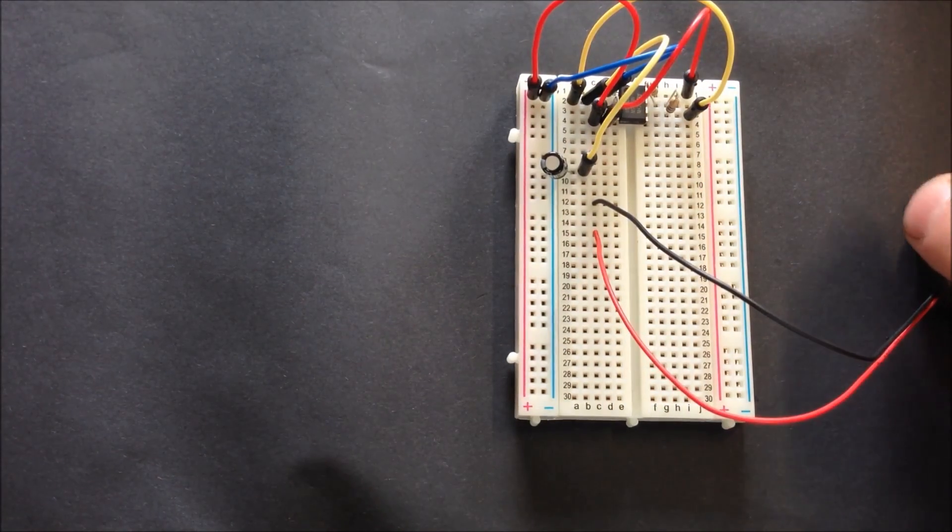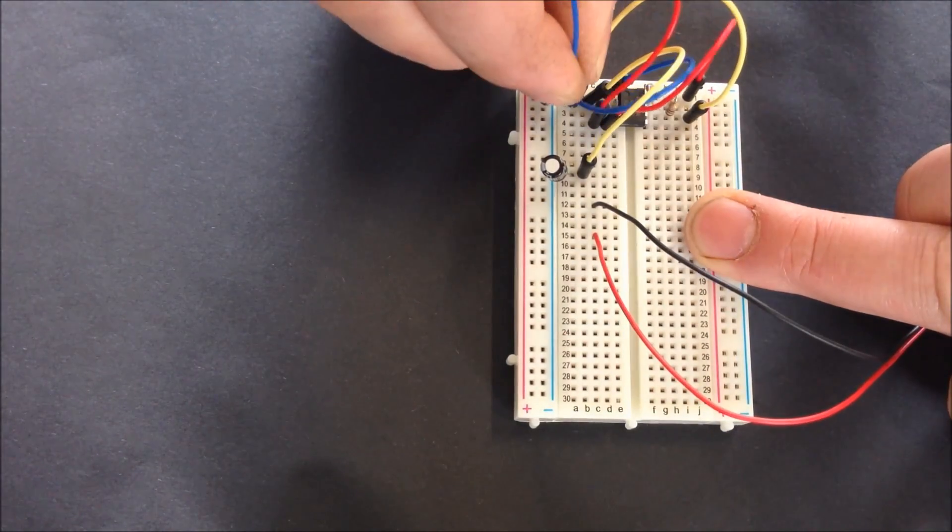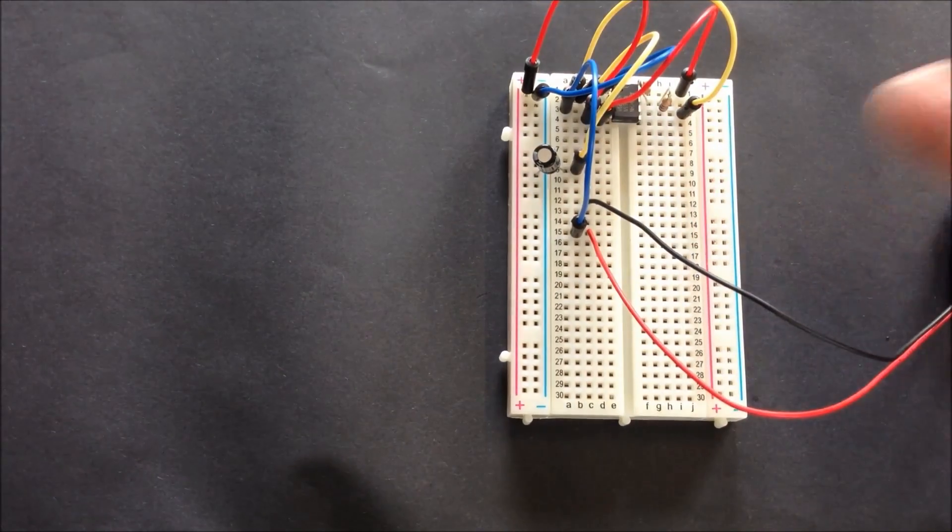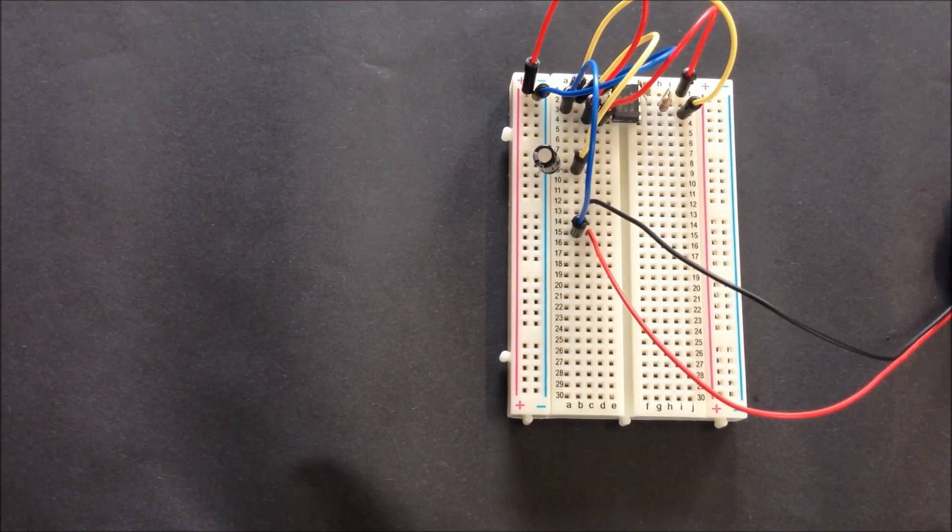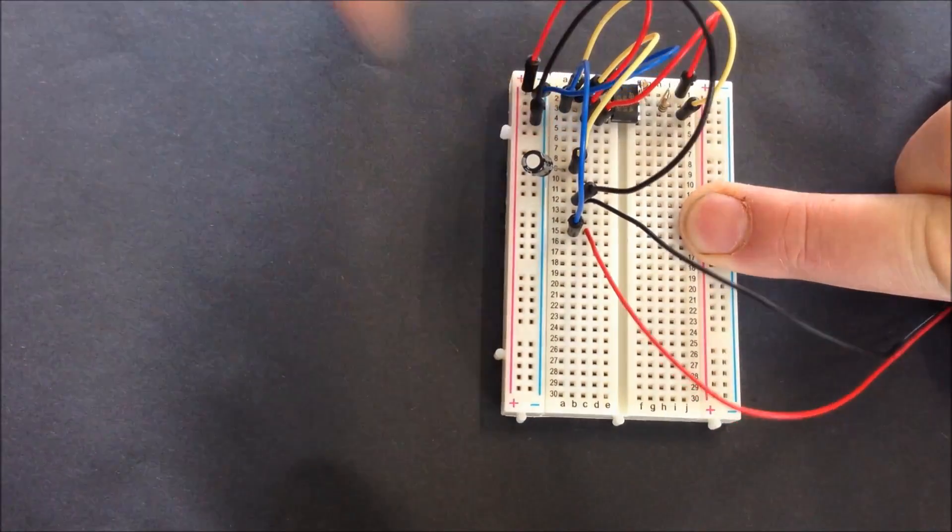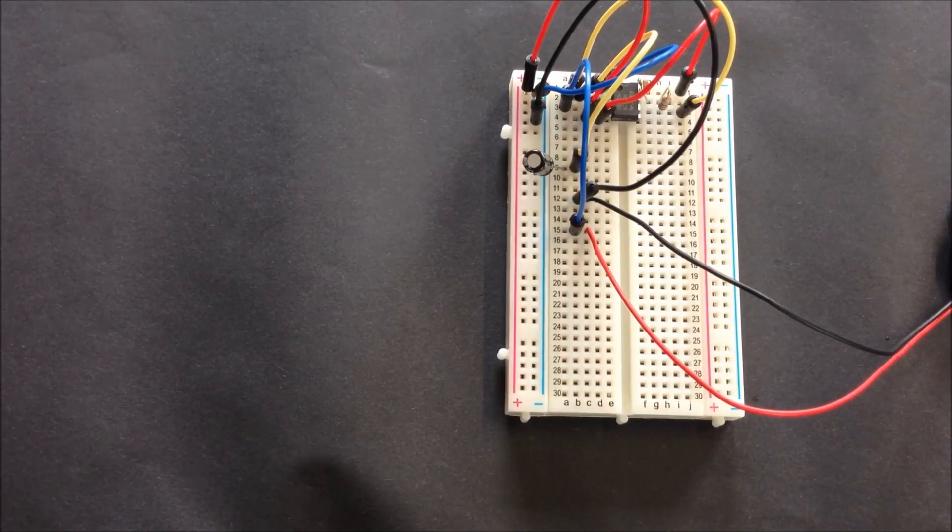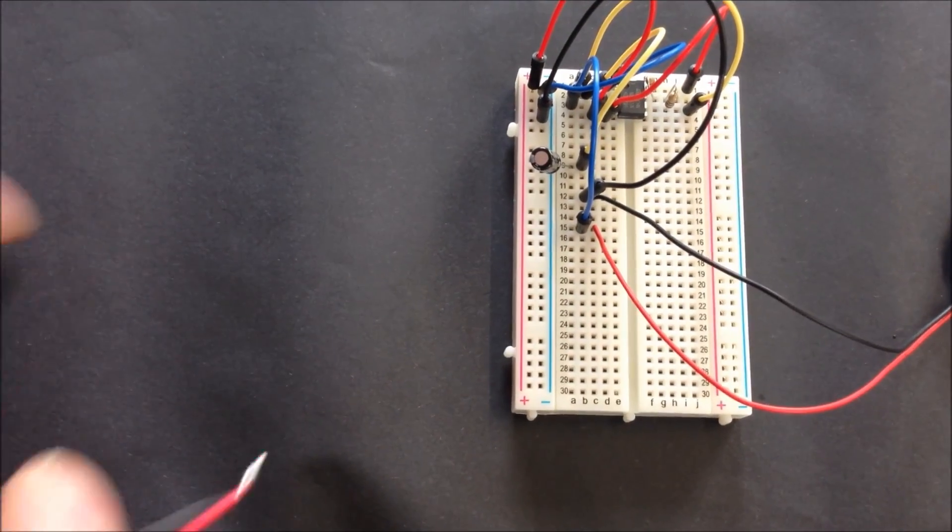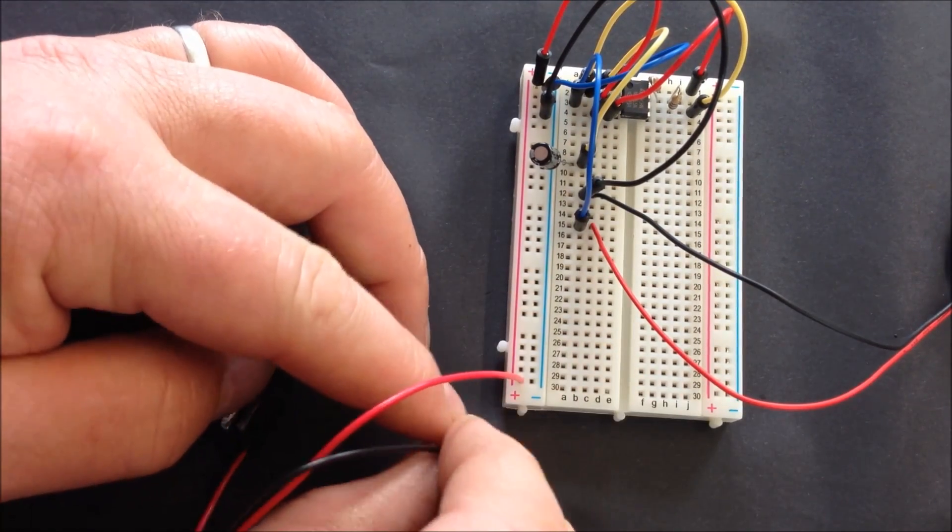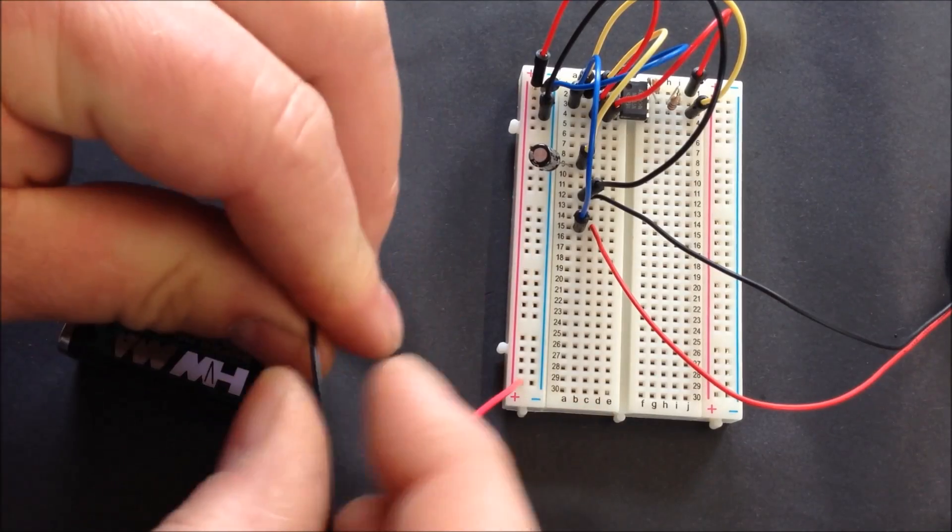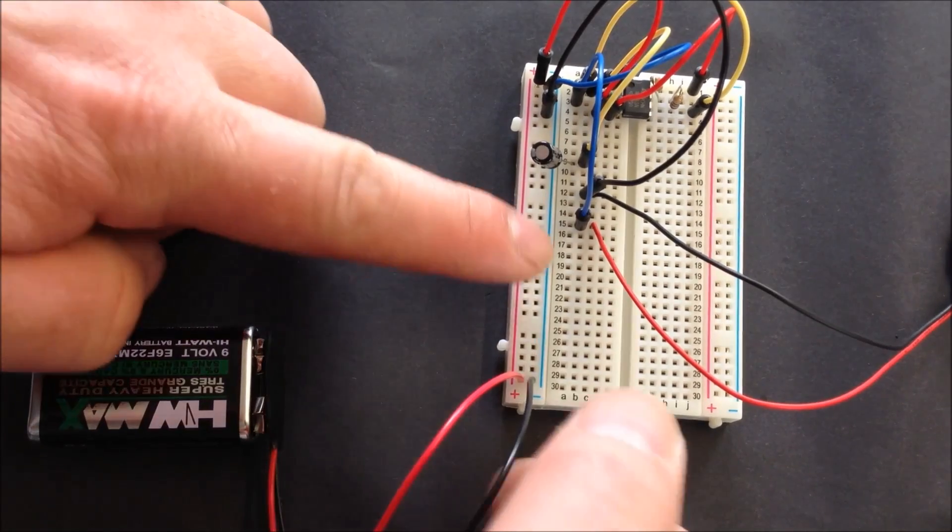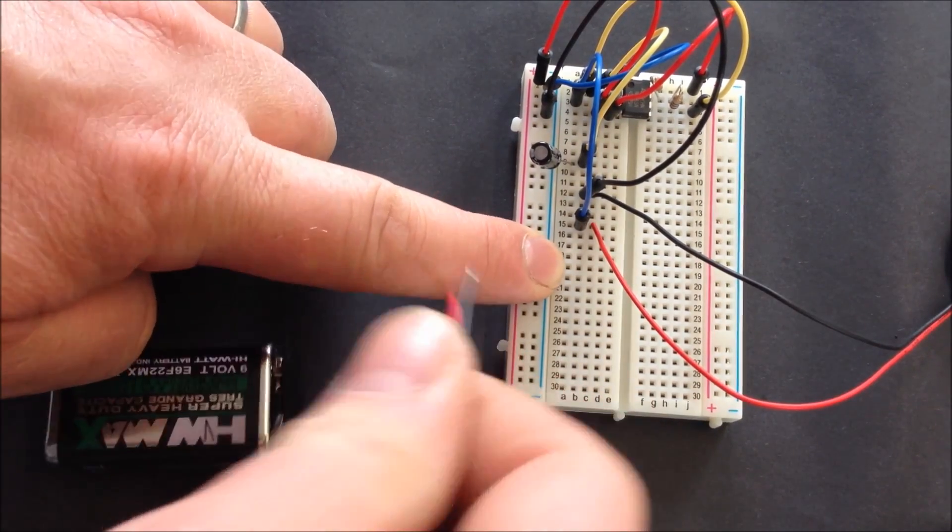And then a couple of jumper wires from pin number 3, which is our output, to our buzzer. And finally the other side of the buzzer to the minus. Then what we need to do is take the battery and see if it works. So the red is positive and the black is negative. That would quickly get annoying.